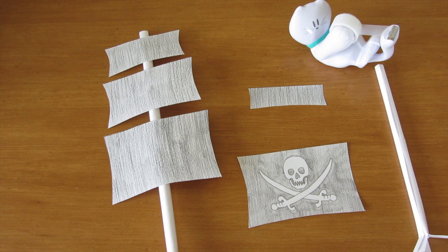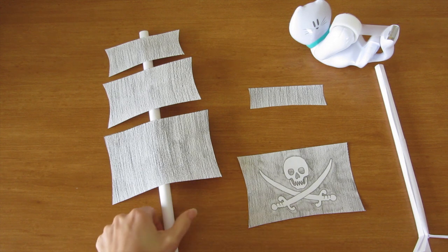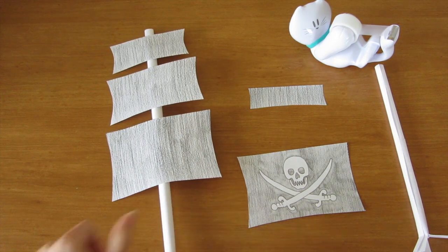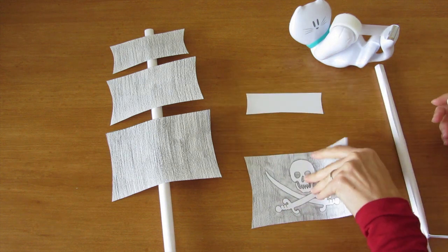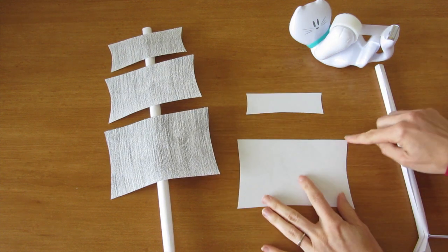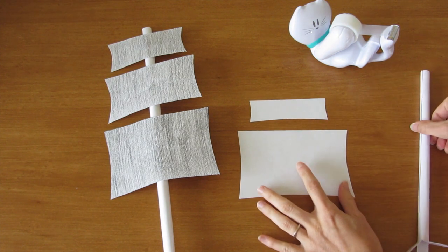Now you're going to attach your sails to the mast. I've already done the mainmast. To do that, turn your sails upside down. Make sure the flat part of the sails is at the top.